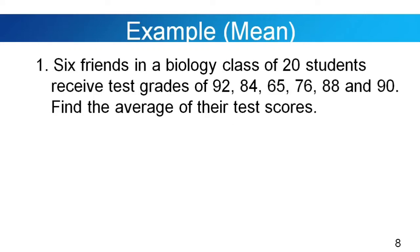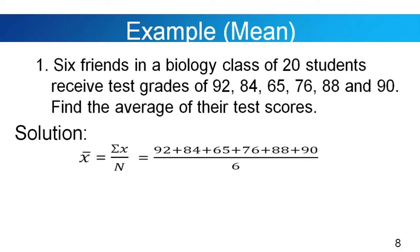Let's have our first example. Six friends in a biology class of 20 students receive test grades of 92, 84, 65, 76, 88, and 90. Find the average of their test scores. Using our formula, x̄ = (92 + 84 + 65 + 76 + 88 + 90) / 6 = 495 / 6 = 82.5. The average of their test scores is 82.5.